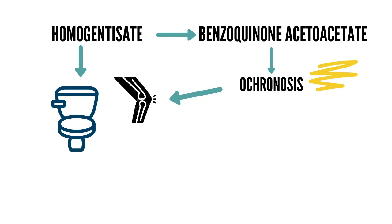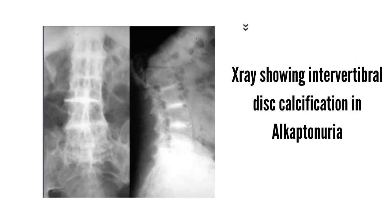This molecule deposits in certain organs. When benzoquinone acetoacetate accumulates in the joint spaces it leads to ochronotic arthritis. Most patients present with lower back pain between 25 and 40 years of age, progressing to kyphosis and often ankylosis. Other patients present with arthritis in the hip or knee joint; many require joint replacement and some become bedridden. Radiographs show flattened and calcified intervertebral discs. Later involvement of large peripheral joints can resemble rheumatoid arthritis clinically but osteoarthritis radiographically.